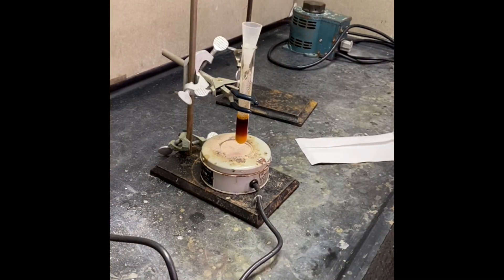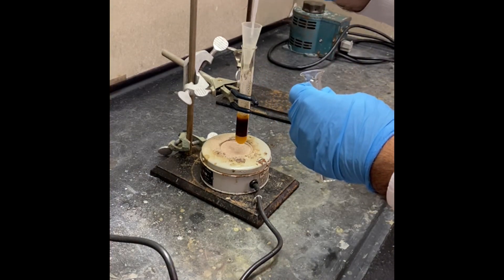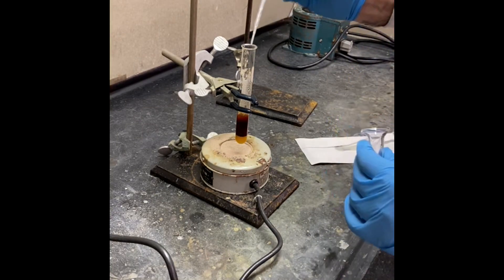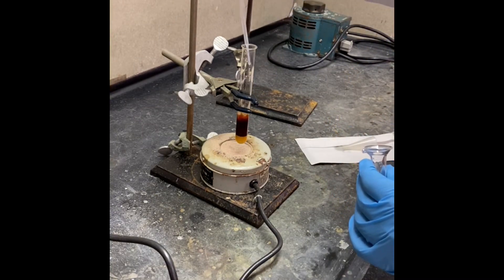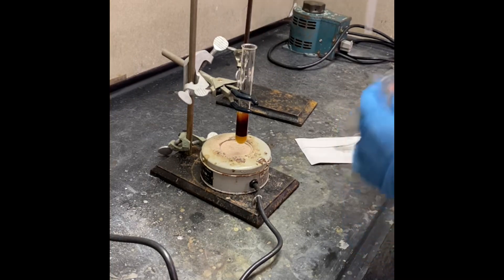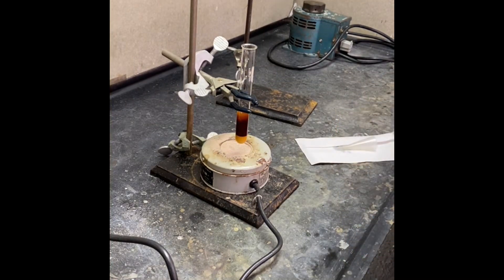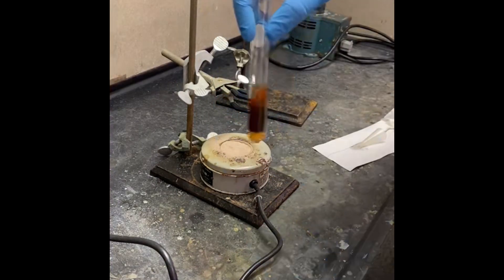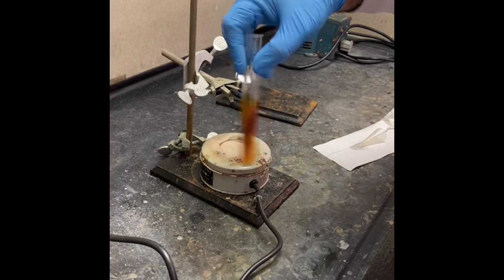Some is stuck on the wall of the tube, so we can use some water for that. I added around one mL of water, and let's gently swirl that.